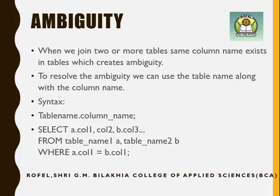Suppose I want the name, roll number, and total marks, referencing the student and marks tables. The query will be: SELECT s.rollnumber, name, total FROM student s, marks m WHERE s.rollnumber equals m.rollnumber. This will fetch roll number and name from the student table, and total from the marks table.